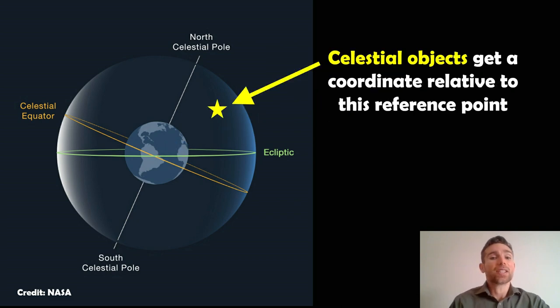Now if we had an object in the sky, let's say a star on the celestial sphere, it'll have a coordinate so we can actually find it. It will have a coordinate relative to this reference point, relative to the first point of Aries. It will have some coordinate in the RA which will be some hours, some minutes, some seconds, but the starting point is the first point of Aries.